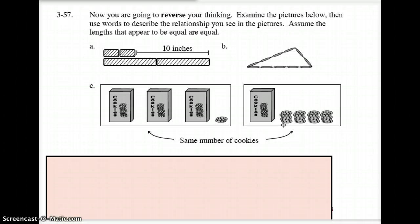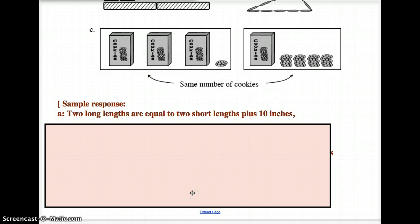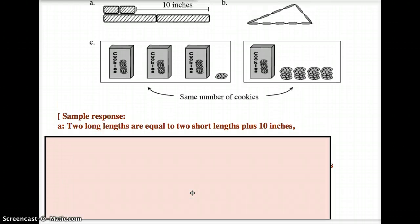Alright, you should have letter A done by now. Letter A, the way I wrote it out, is that the two long lengths, these two long ones right here, are equal to the two short boards plus an additional 10. Now would it have been wrong to say that the two short boards are equal to the two long lengths minus 10 inches? No, that would have been the same thing. So either one of those works just fine.